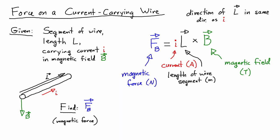Now, the L cross B is just a vector cross product, so it's also possible to write this in terms of the magnitudes, in which case we would have F_B is equal to ILB sin θ.